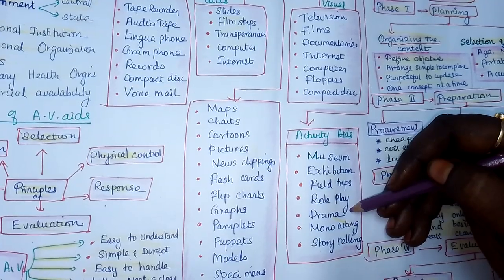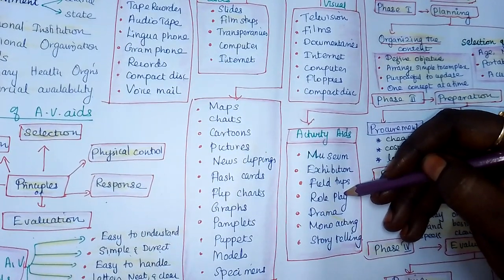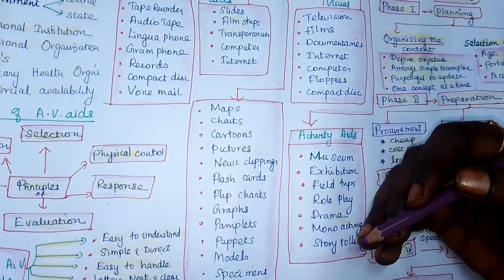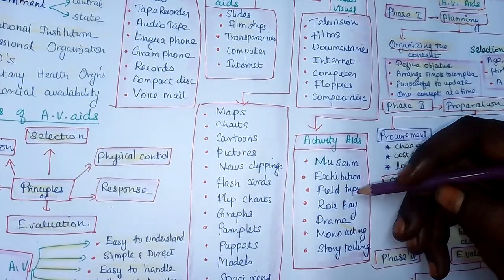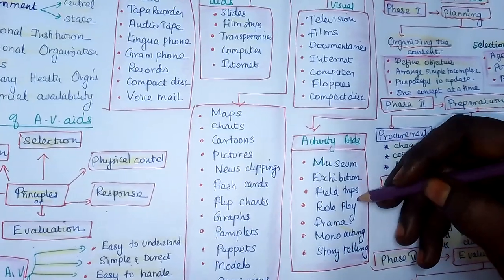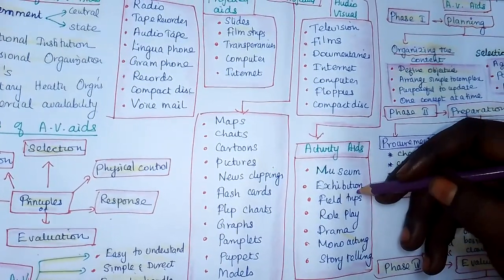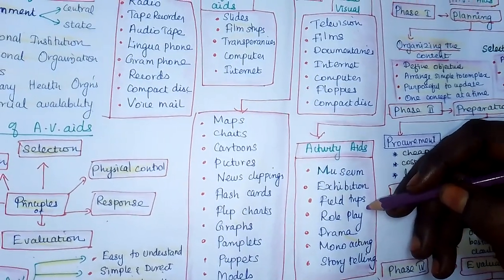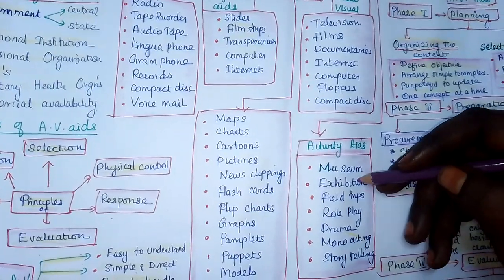For short notes on role play: role play is the spontaneous acting out of something — a social drama. This is an activity aid. For example, you can act as a person who is drunk in a community setting to create awareness. Going to a museum is also an example of an activity aid.